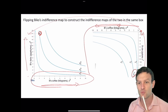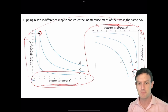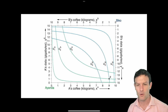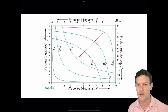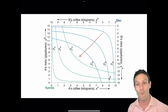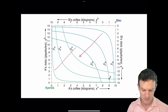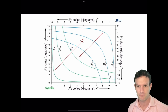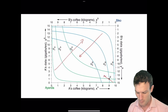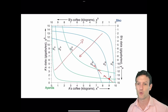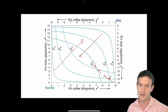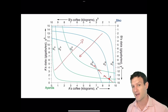Now we're going to put together an Edgeworth box combining Ayanda's and Bicor's indifference curves in the same figure. For Bicor, going from northeast to southwest indicates what he prefers — that's where he gets more. For Ayanda, it's the opposite: southwest to northeast. There is a possibility for them both to do better by moving from point z towards the center of the box — an opportunity to engage in exchange, such as Ayanda giving up some x to get y from Bicor, and Bicor giving up some y to get x from Ayanda.